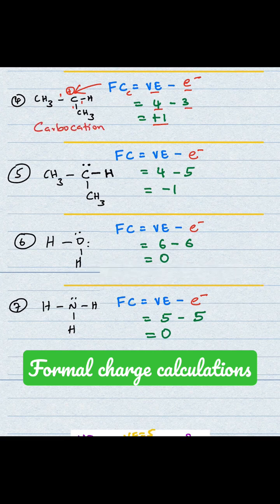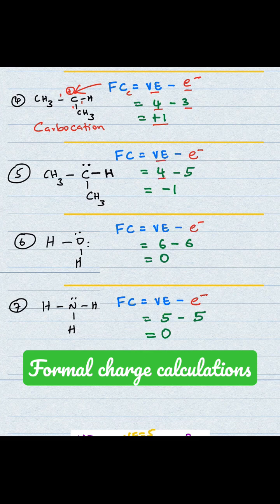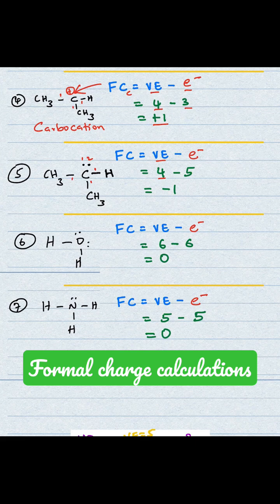Next example, we're looking at the formal charge of this carbon. Just like before, the valence electron of carbon is 4. But in this case, the number of electrons around carbon - we have 1 and then 2. Then for each bond, we have 1, 1, 1. So 3 bonds gives you 3, plus 2 gives you 5 electrons. 4 minus 5 gives you minus 1.